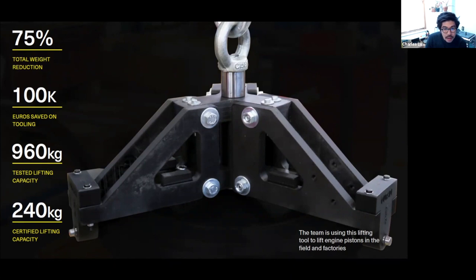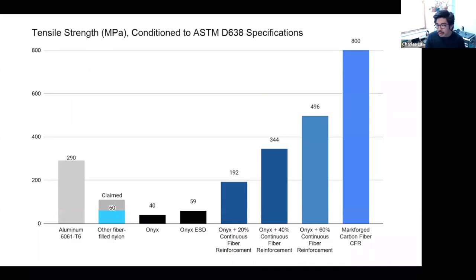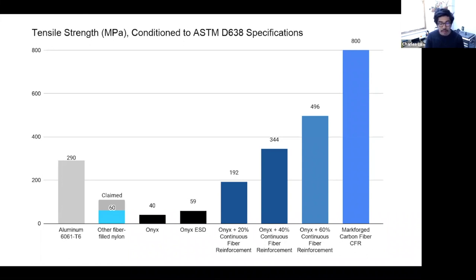On max volume and weight fraction terminology: when I say 60% continuous fiber reinforcement, that is actually of our material, which has its own volume fraction. We don't really disclose those numbers. But if you look at the strength on the data sheet, you could probably back out approximately how much fiber is in there. With chopped fibers, typically 5 to 35% by weight — for the continuous fiber material it's higher than that.